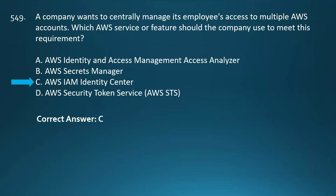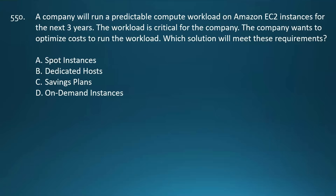Question number 550. A company will run a predictable compute workload on Amazon EC2 instances for the next three years. The workload is critical and the company wants to optimize costs. Which solution will meet these requirements? Options are: spot instances, dedicated hosts, savings plans, or on-demand instances. For a predictable long-term critical workload running on Amazon EC2 for three years, the best cost-optimized and reliable solution is EC2 Savings Plans. You commit to a consistent amount of usage and get up to 72% cost savings compared to on-demand pricing, with no interruption risk unlike spot instances.